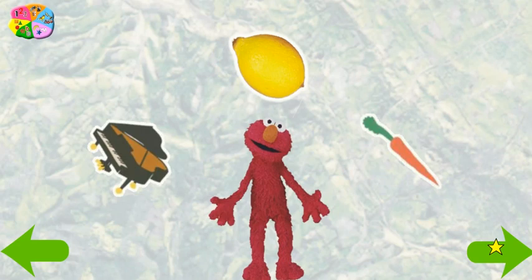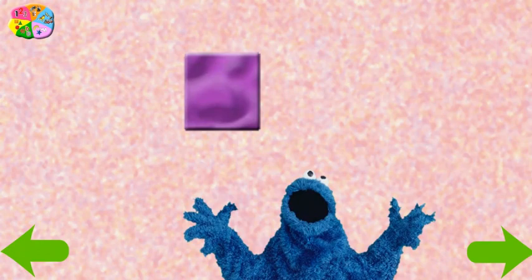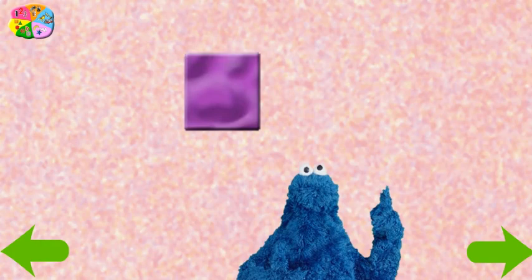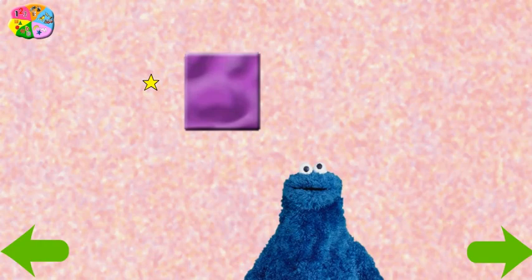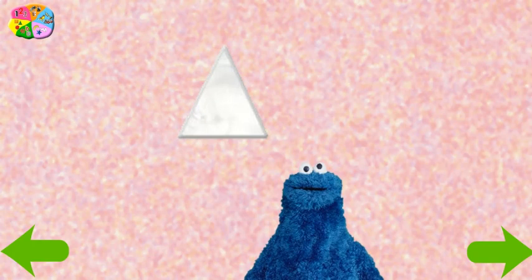Elmo thinks that Cookie Monster has some shapes for you. Be so glad you're here. Look! It's a shape! Move your star to it and find out which one it is. Square. Square! Right on!